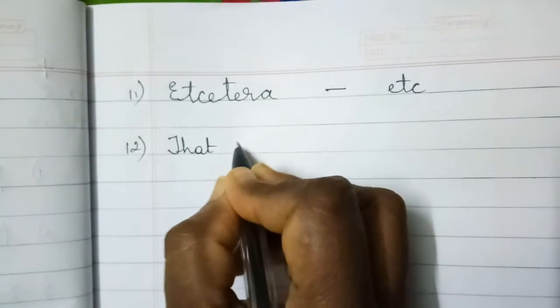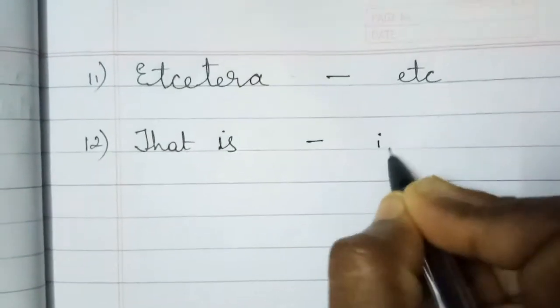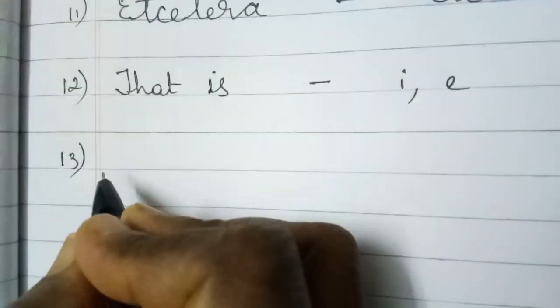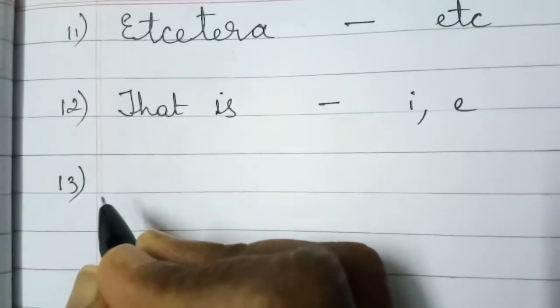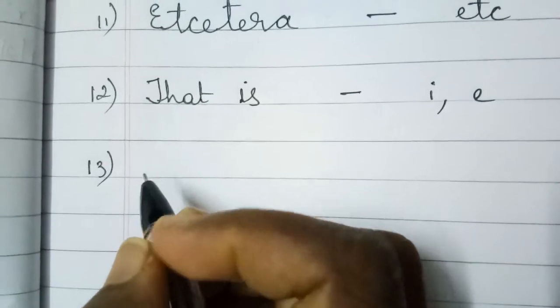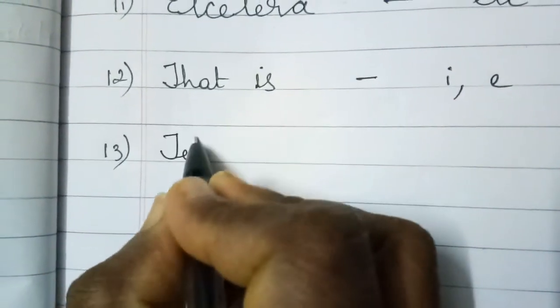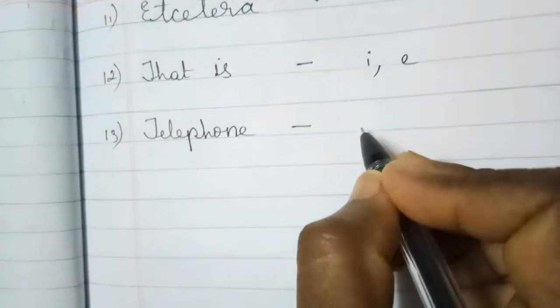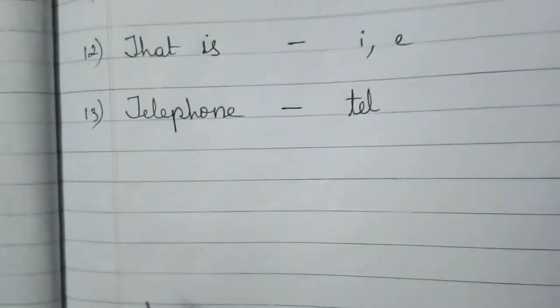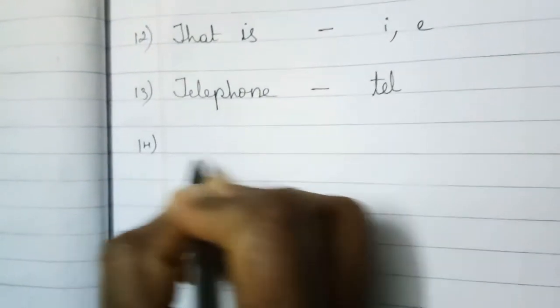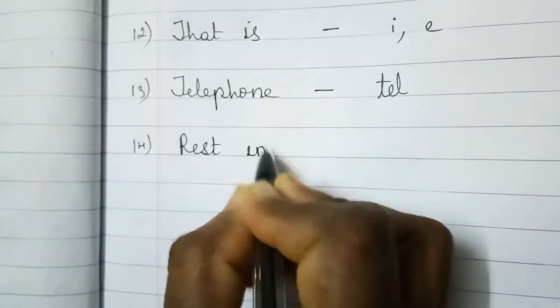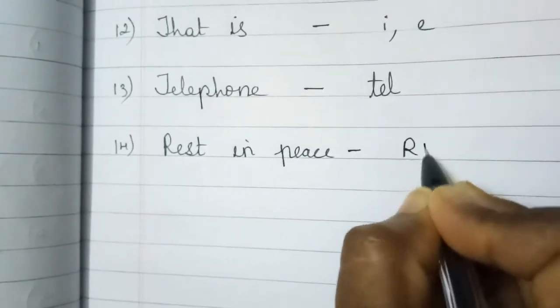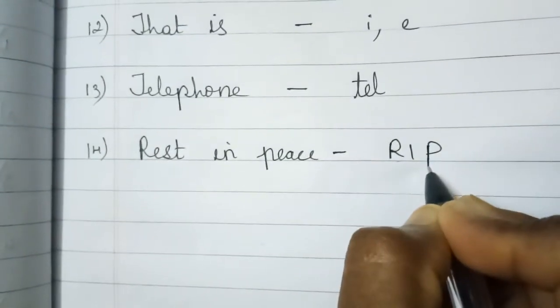Twelfth one, that is. You write I comma E. Third one, telephone, T-E-L-E-P-H. You can write T-E-L, telephone. Fourteenth one, rest in peace. R-I-P, rest in peace.